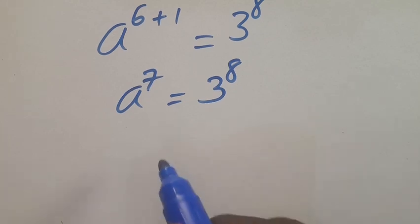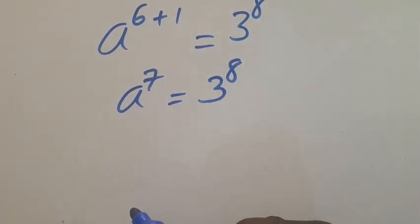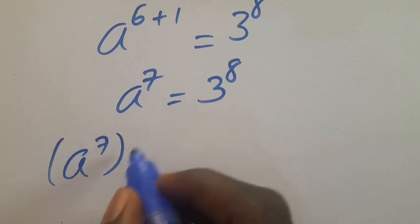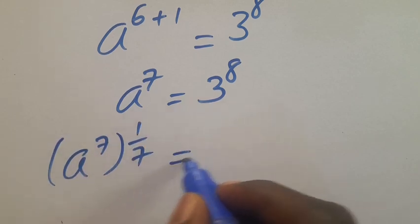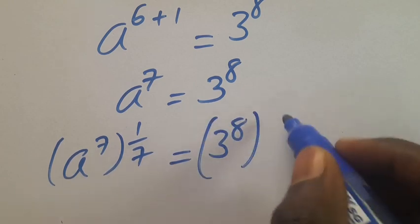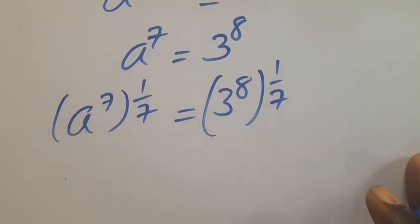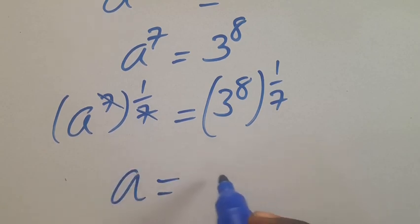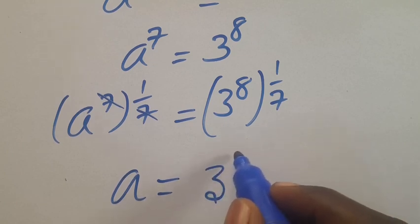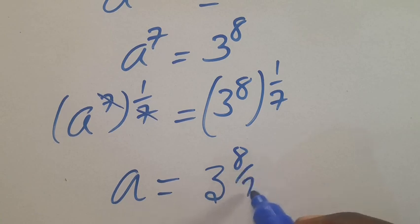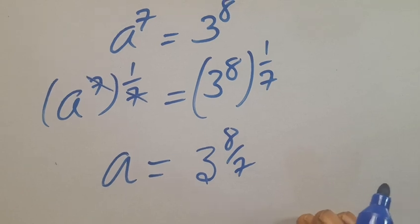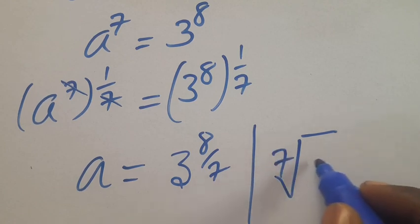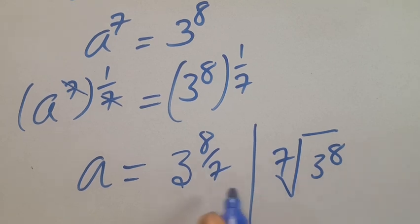So we have a to the power of seven equals the right side to the power of eight. To eliminate this, we take the seventh root of both sides: a to the power of seven to the power of one-seventh equals the right side to the power of eight to the power of one-seventh. The sevens cancel, so a equals the seventh root of three to the power of eight.